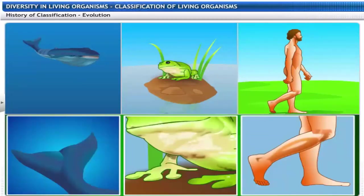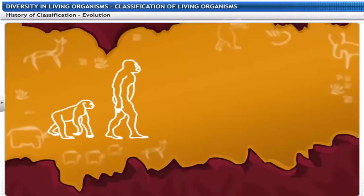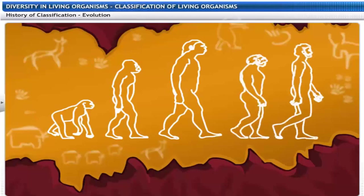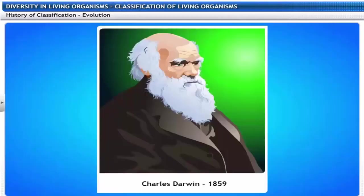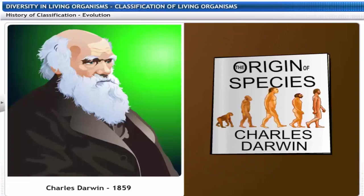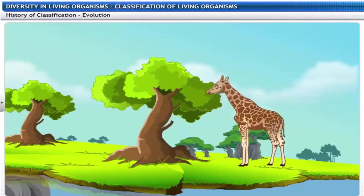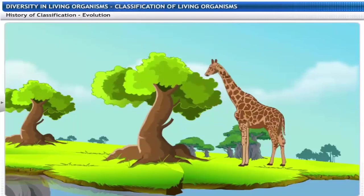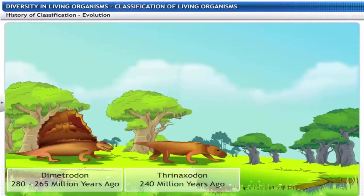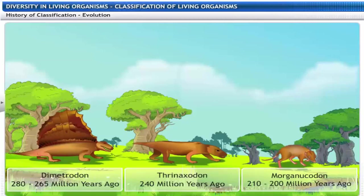All living things are classified on the basis of their form and function. But forms and functions evolve with time. Evolution is the change in inherited traits from one generation to the next. It was Charles Darwin who put forward the idea of evolution in 1859, in his book The Origin of Species. Most life forms that we see today have evolved to survive better. Hence, classification of life forms is closely related to their evolution.